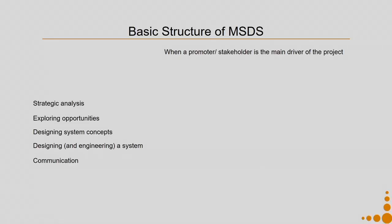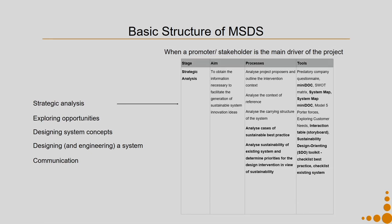The basic structure of the MSDS method with respect to all these stages — first, let us take strategic analysis when a promoter or stakeholder is the main driver. In this case, to do the strategic analysis, our aim is to obtain information necessary to facilitate the generation of sustainable system innovation ideas. We do this first by analyzing project proposals and outlining the intervention context, then by analyzing the context of reference — the existing context — to further define the intervention context.